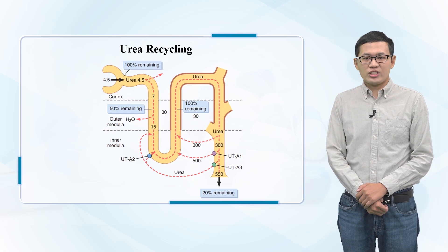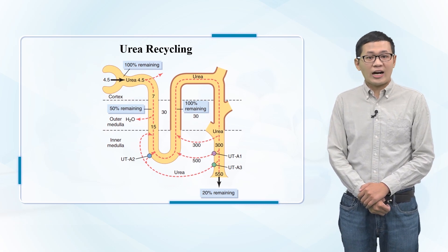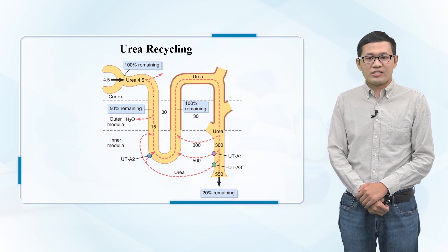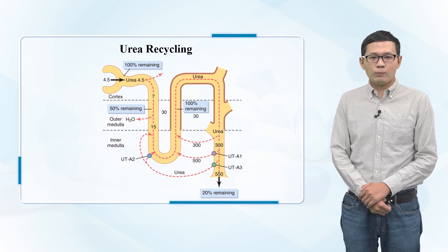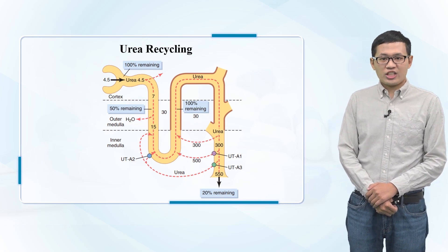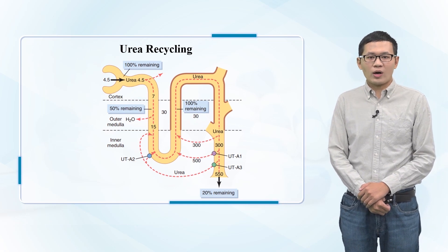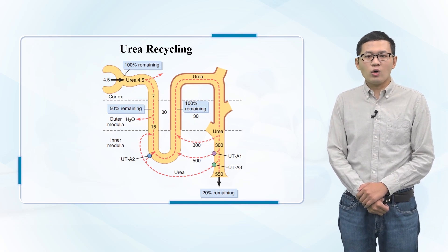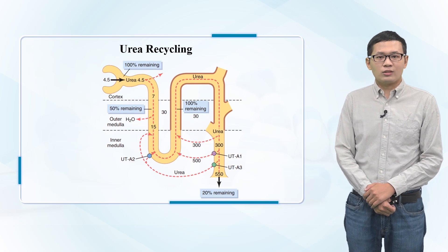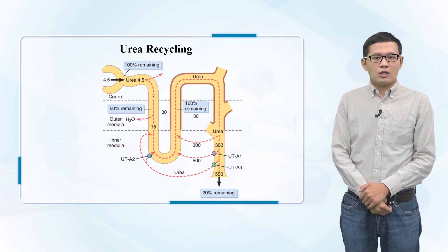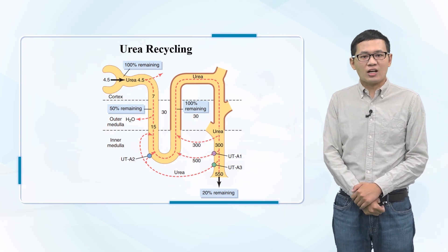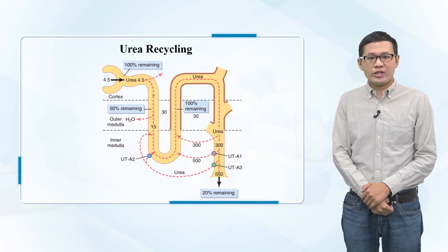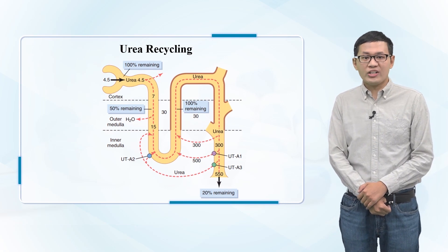This urea diffuses into the thin loop of Henle, and then passes through the distal tubulars, and finally passes back into the collecting duct. So there's essentially a traveling pool of urea that escapes the urine and finds its way back into the loop of Henle, then runs the whole course back again to the collecting duct. The recirculation of the urea has trapped the urea in the renal medulla and contributes to the hyperosmolality of the medulla.